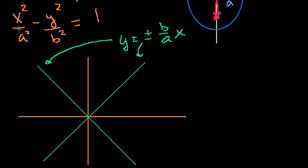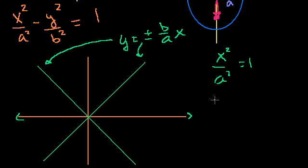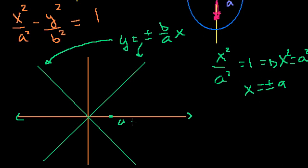Can x or y equal 0? Well, if y equals 0, that puts us along the x-axis, and you get x² over a² equals 1, which means x² equals a², which means x equals plus or minus a. So the points (a, 0) and (-a, 0) are both on this hyperbola. Since they have to be contained by the asymptotes and never go through them, you know this is going to be a hyperbola that opens to the left and the right.